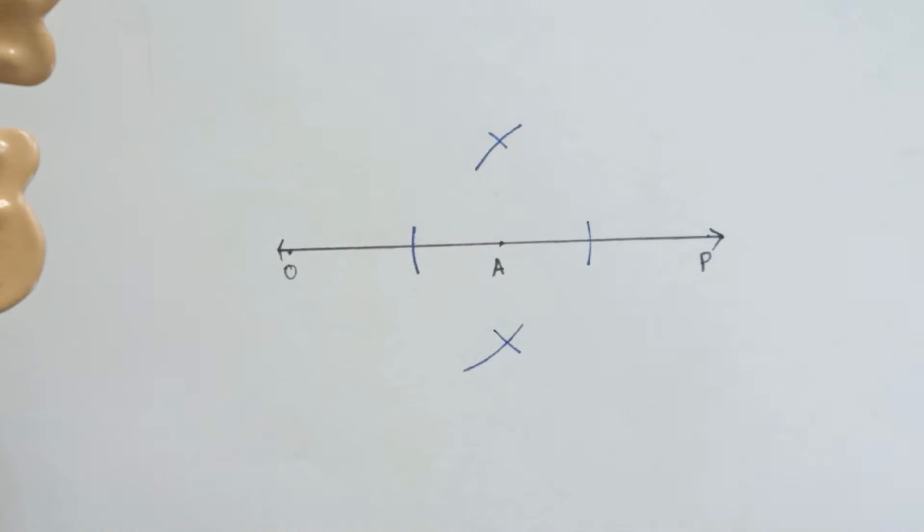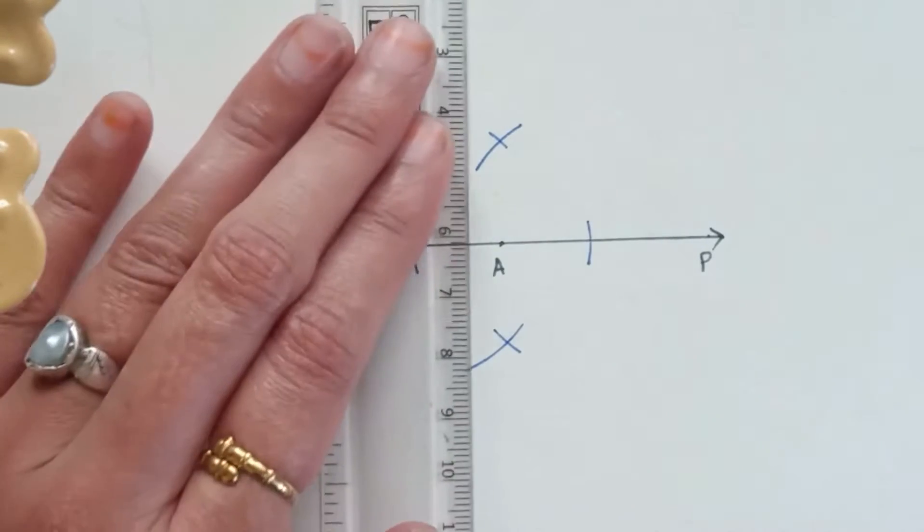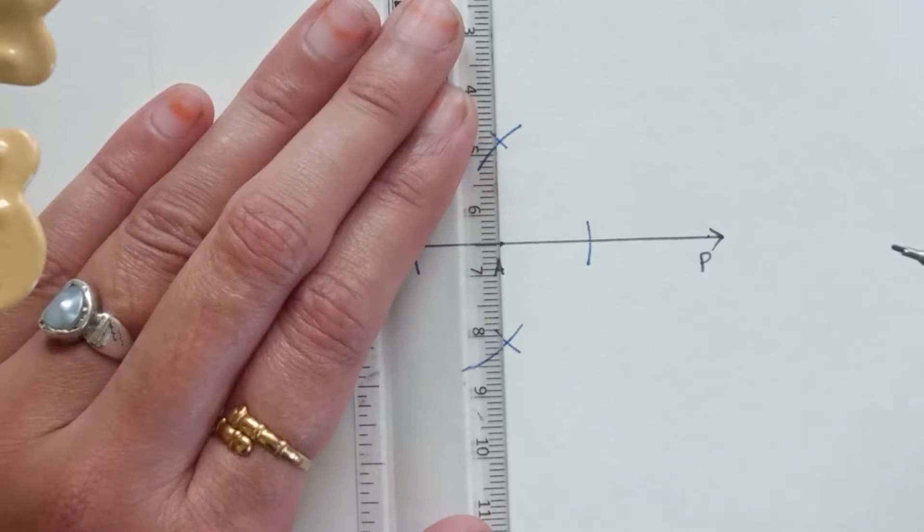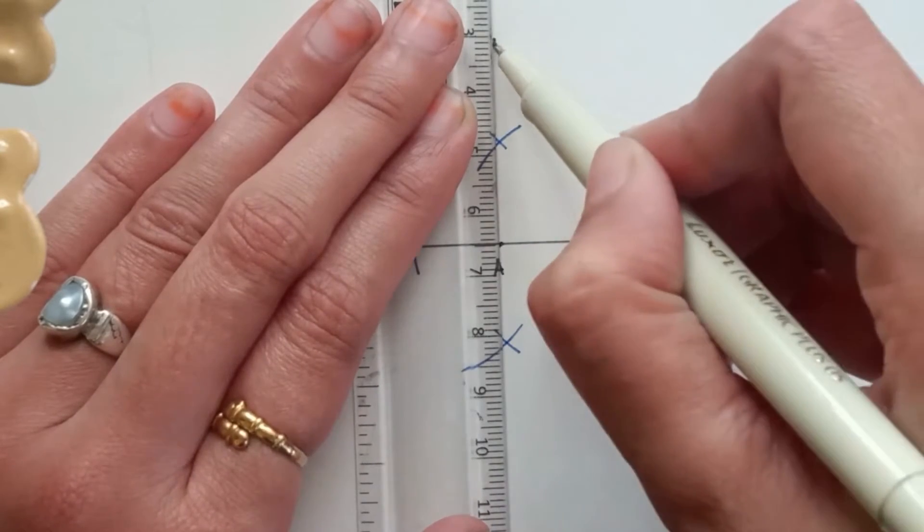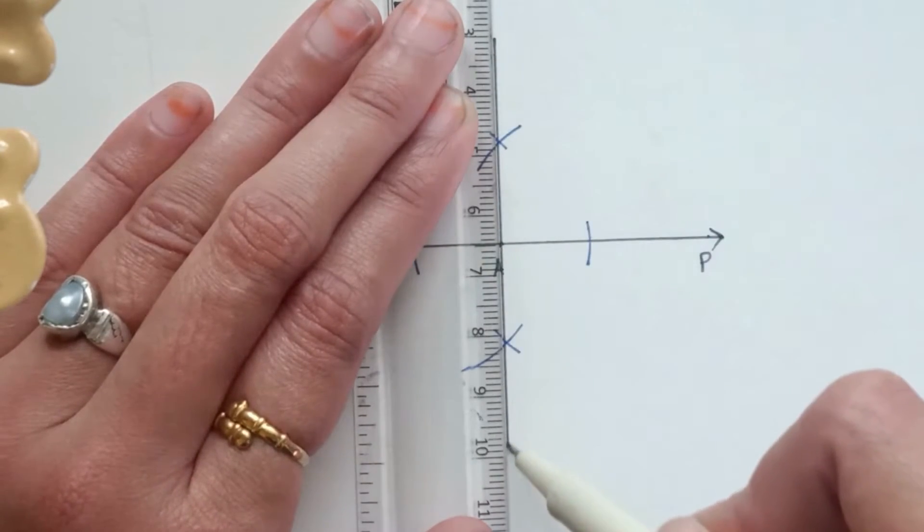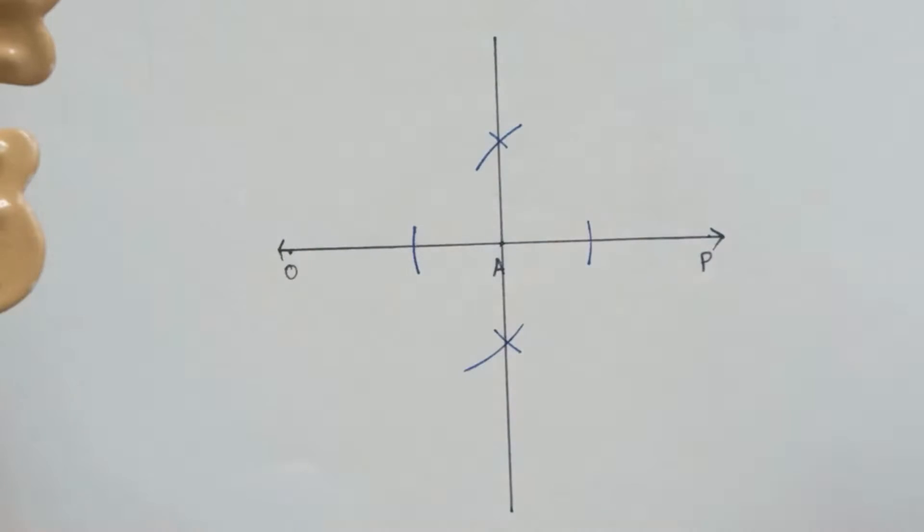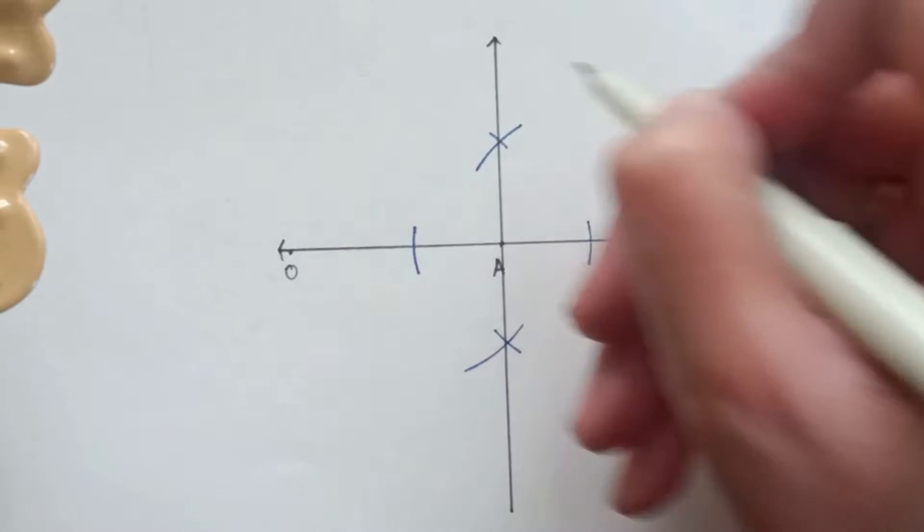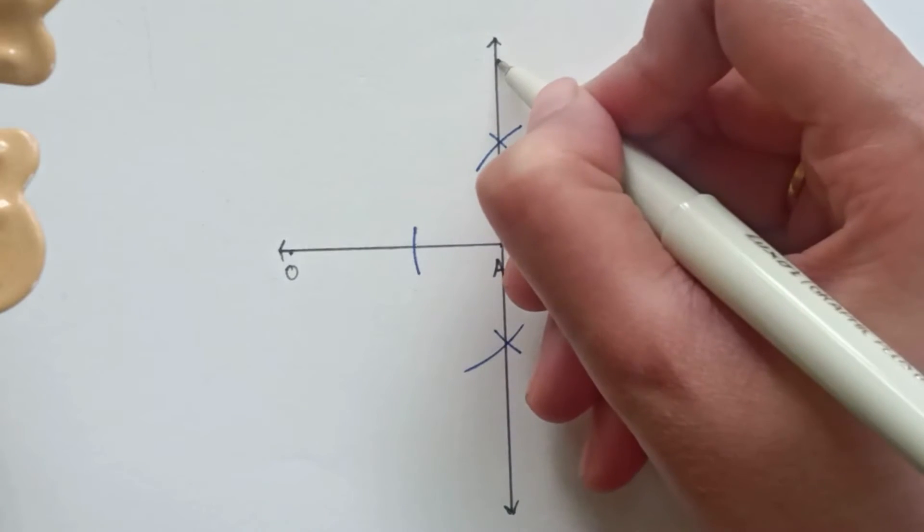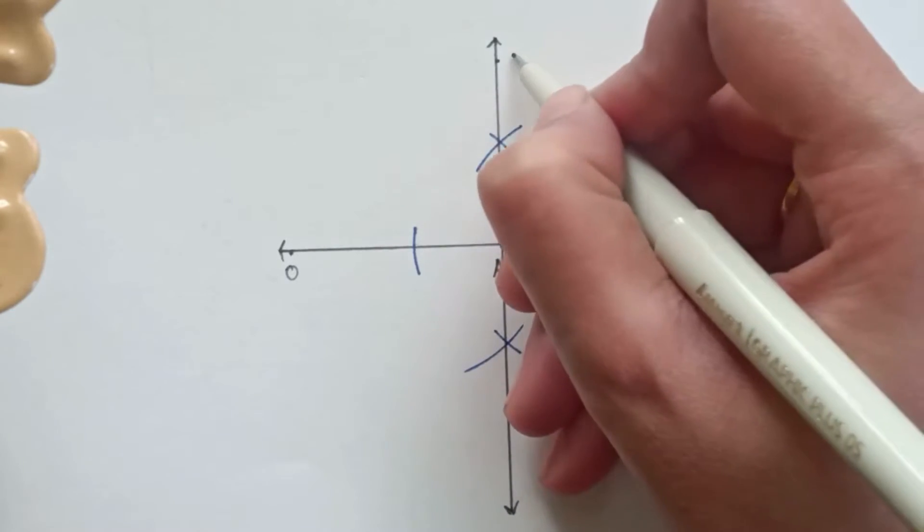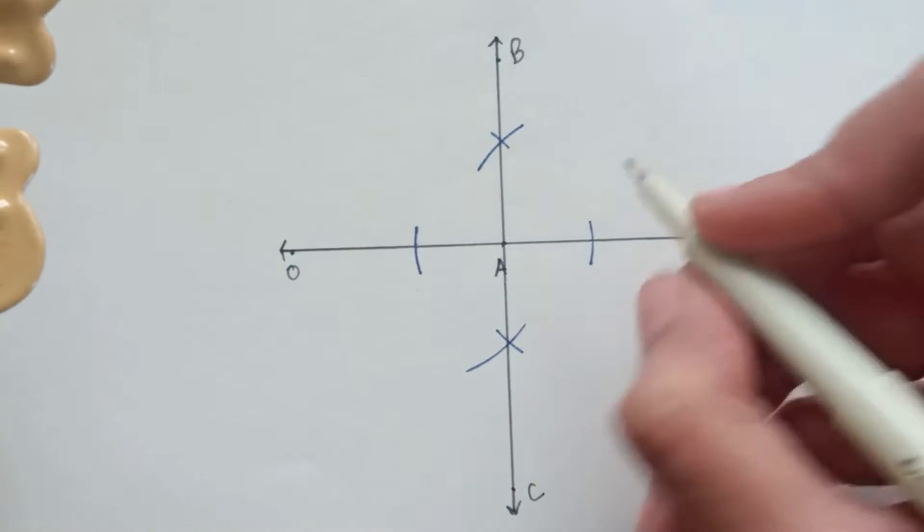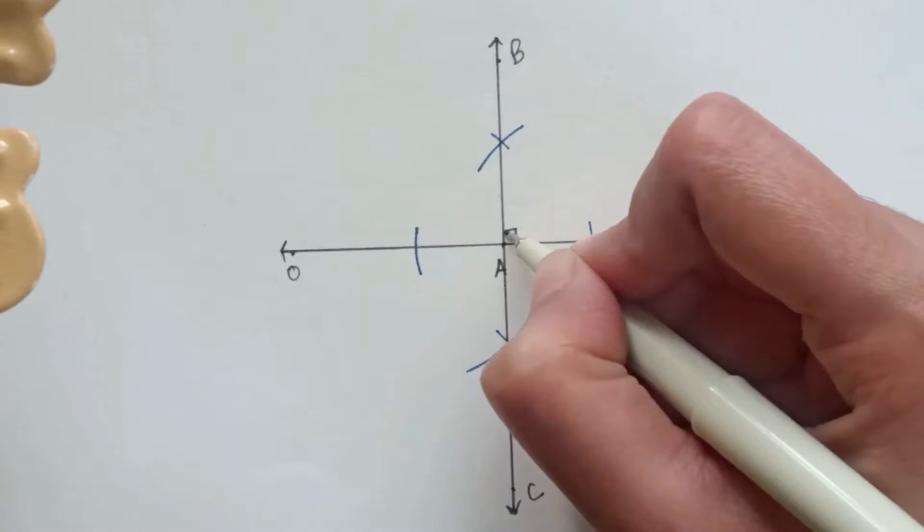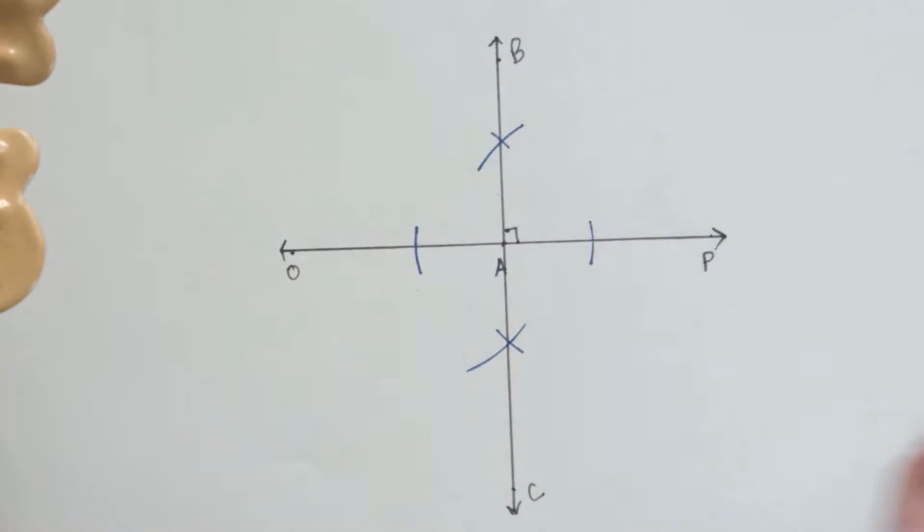Similarly on the other side of the line. Now we have to join these two intersecting arcs and this line will pass through A. And see, this angle that we got will be a 90 degrees angle.